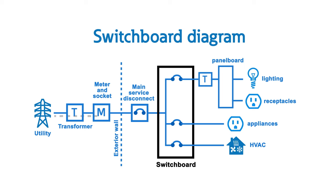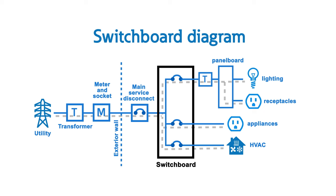Switchboards are used to safely distribute electricity throughout commercial and industrial facilities. A switchboard is a component of an electrical distribution system which divides an electrical power feed into branched circuits while providing a protective circuit breaker or fuse for each circuit in a common enclosure.